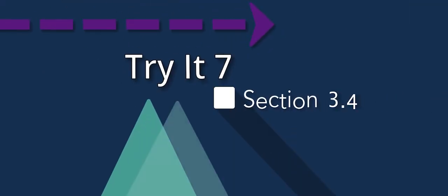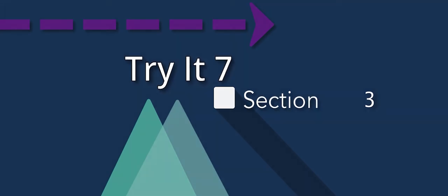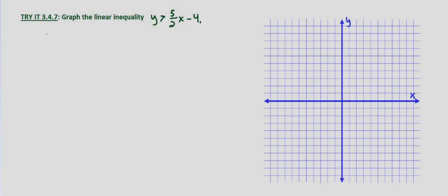In this problem we're asked to graph the inequality y is greater than 5 halves x minus 4. So the first step, any time we have the graph of inequality, is graph the boundary line.